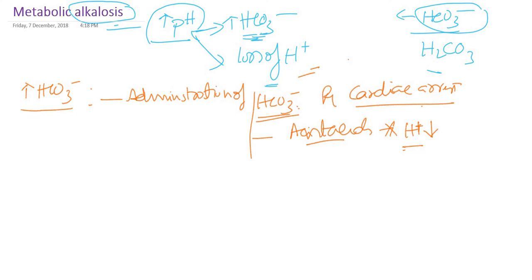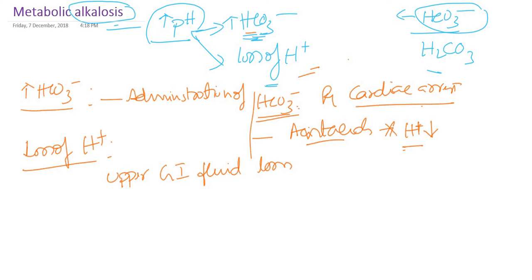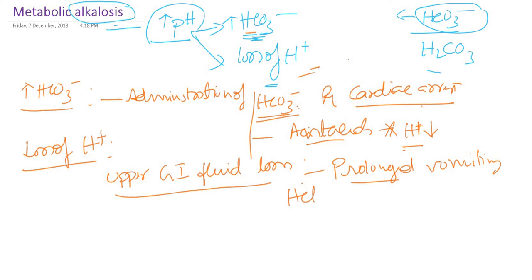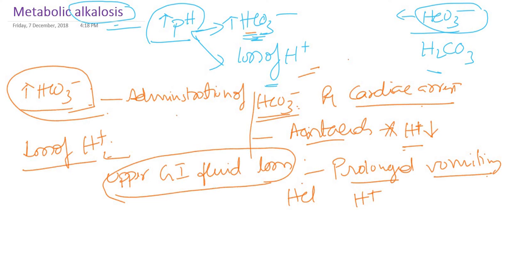Another important reason for increased bicarbonate is loss of hydrogen ion, which is mainly due to upper GI fluid loss. In metabolic acidosis, we studied there is loss of lower GI fluid through diarrhea. Upper GI fluid loss means prolonged vomiting. We know the stomach contains hydrochloric acid. With severe and prolonged vomiting, along with the upper GI fluid, the patient tends to lose hydrogen ion. So loss of hydrogen ion leads to an increase in bicarbonate.